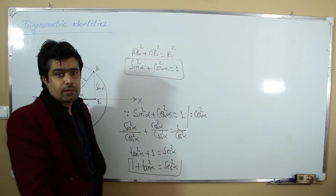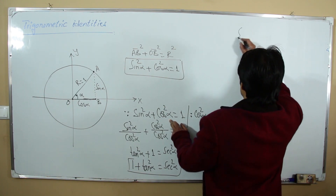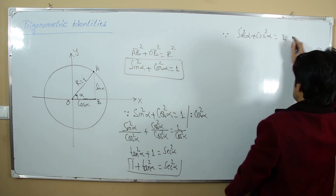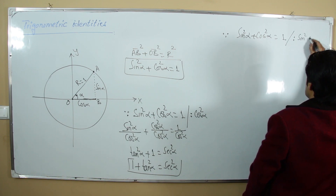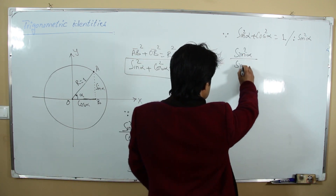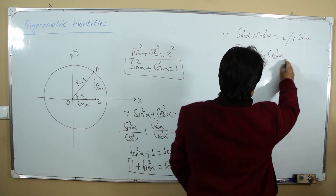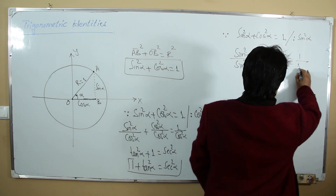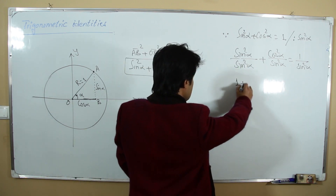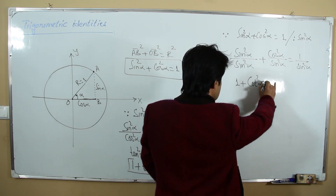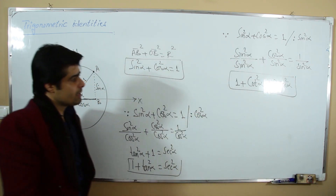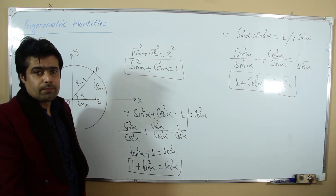Once again, starting from sin²α + cos²α = 1, I can divide both sides by sin²α. This gives sin²α/sin²α + cos²α/sin²α = 1/sin²α. Cancelling and simplifying: 1 + cot²α = csc²α. This is another fundamental identity of trigonometry.